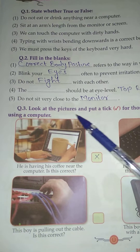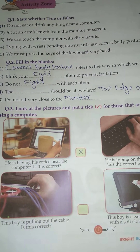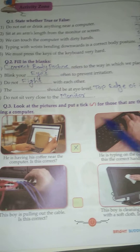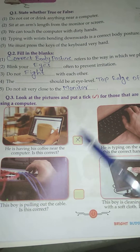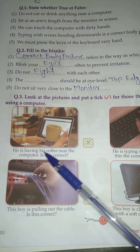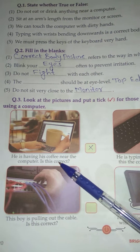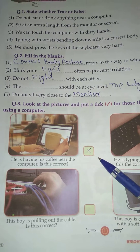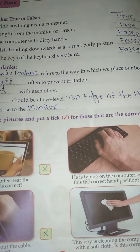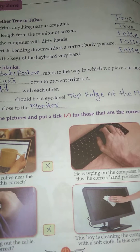Question number 3: Look at the pictures and put the right tick for those that are the correct ways of using a computer. Number 1: He is having his coffee near the computer — is this correct? Wrong. Number 2: He is typing on the computer — is this the correct hand position? Wrong.